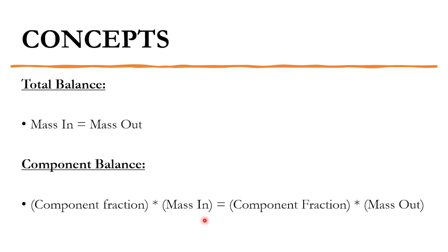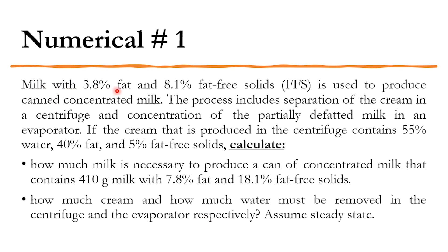The concepts remain the same, but we will be doing some more complex tasks today. Let's move to numerical number one. Milk with 3.8% fat and 8.8% fat-free solids is used to produce canned concentrated milk. The process includes separation of cream in a centrifuge and concentration of partially defatted milk in an evaporator.